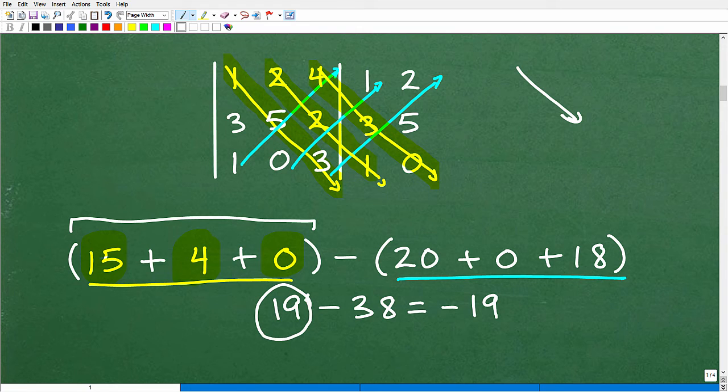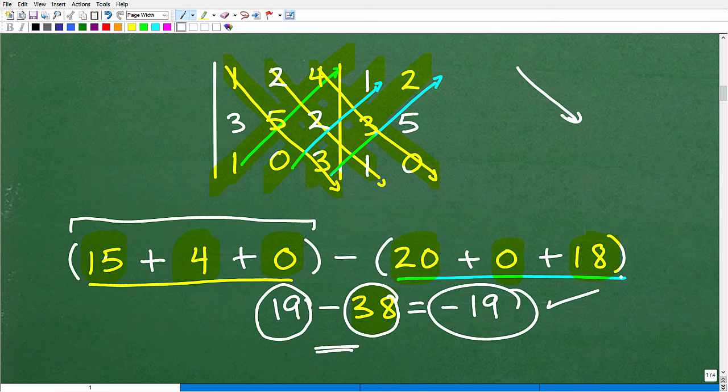Now, we're going to go ahead and subtract it away from the second group. And the second group is here in blue. So that's going to be 1. We're going to do the same thing. 1 times 5 times 4 is 20. Then we have 0 times 2 times 1. That's 0. Then 3 times 3. That's 9 times 2. That's 18. That's going to be 20 plus 0 plus 18. That is 38. So we have 19 minus 38. When I take that difference, I get negative 19. And that is the answer.